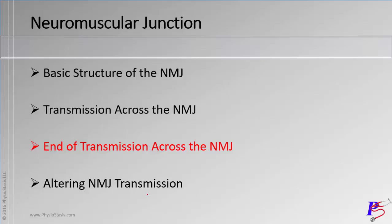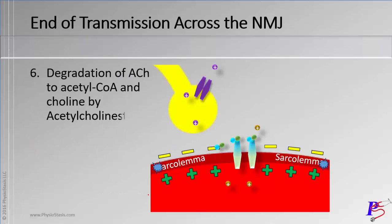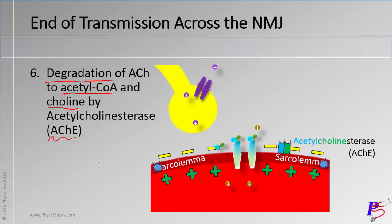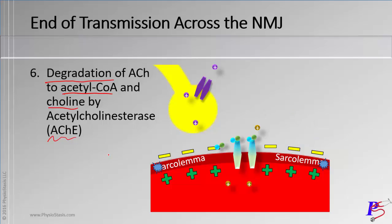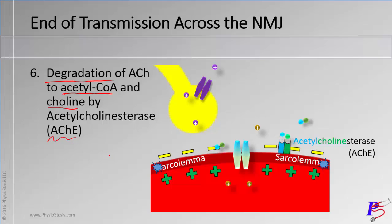How does transmission end? We need to degrade the acetylcholine into its two components — acetyl-CoA (the acetate) and choline — using an enzyme called acetylcholinesterase. The acetylcholine leaves the receptor, binds to the enzyme, and the enzyme breaks it into its two components.